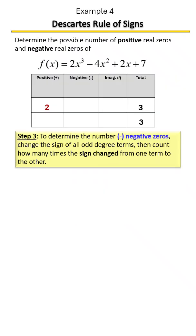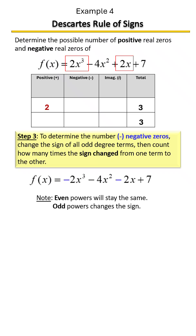Now let's determine the number of negative zeros. All we have to do is identify our odd degree terms. We have two of them. We're going to change them to their opposite, and now we're going to see how many times the sign changed.